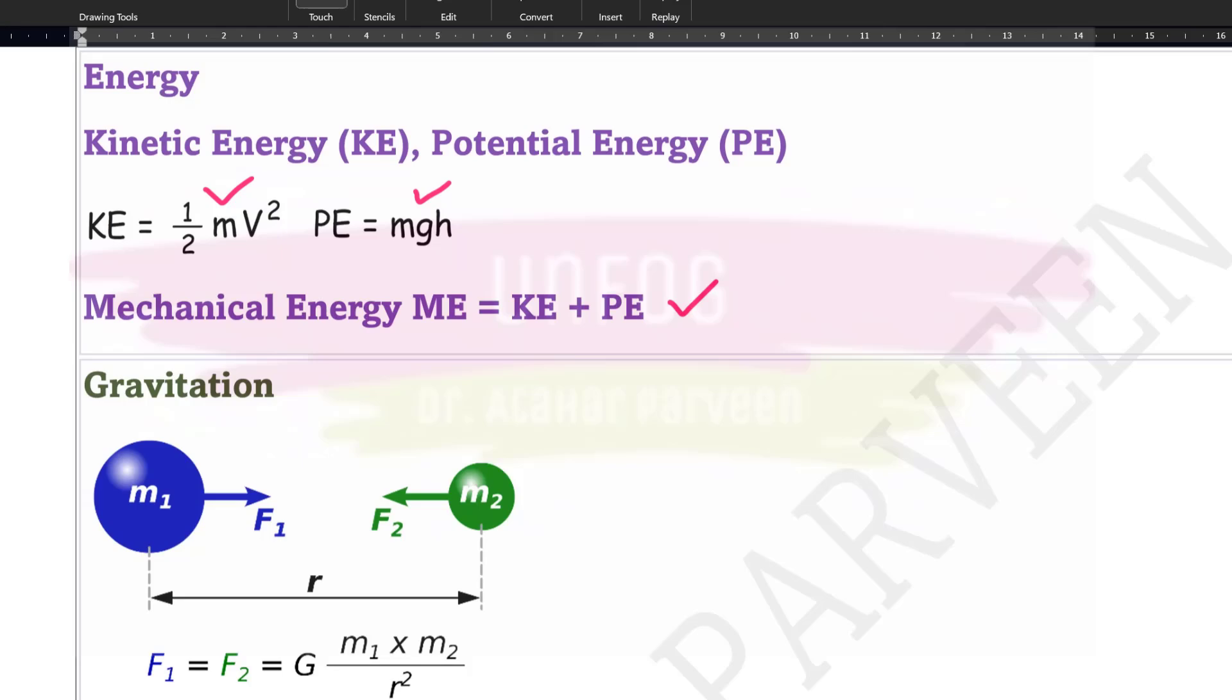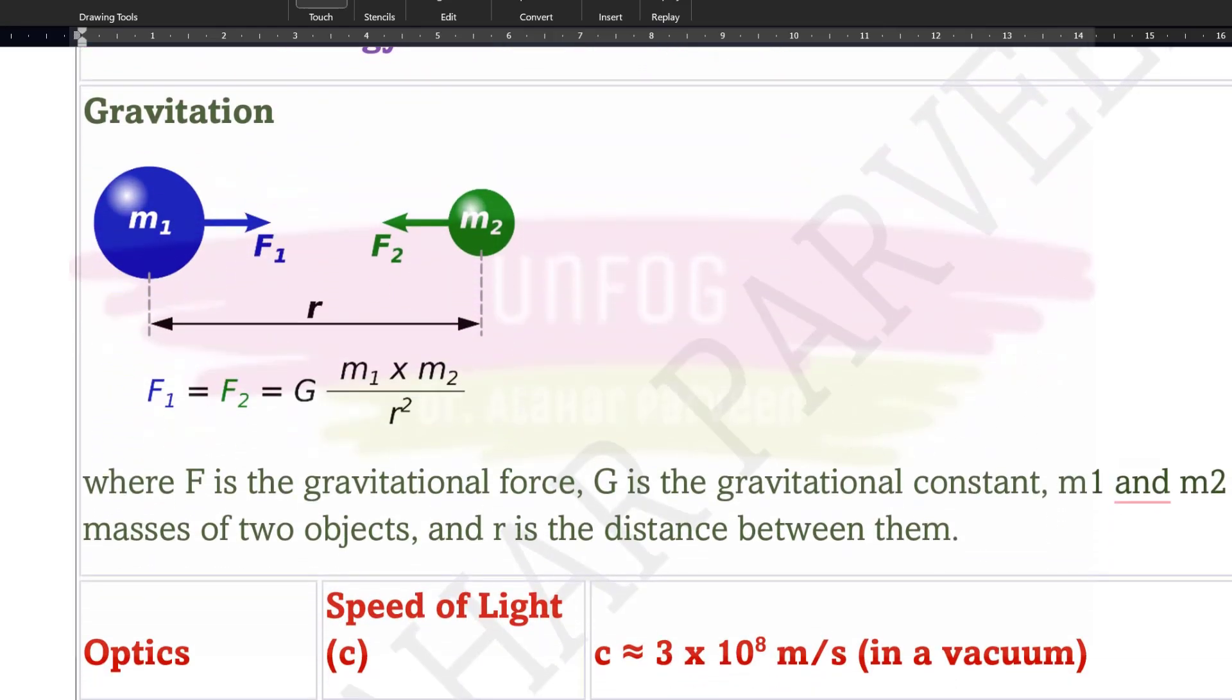Then next we can talk about gravitation. There is a universal law of gravitation wherein we can see that there is a force between two masses and that force is the gravitational force which is equal to g into m1 m2 upon r square. This m1 m2 is the mass of two objects and r is the distance between those two objects and g is of course the gravitation constant.